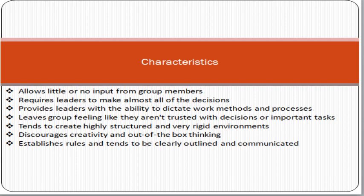The autocratic leader has the ability to dictate work methods and processes. Group members feel they are not trusted with decisions or important tasks. They feel their value is not important, and it becomes a frustration for them because their feedback is not considered. The autocratic leadership style is so dominant that all decisions are made by the leader, and followers are simply obeying.